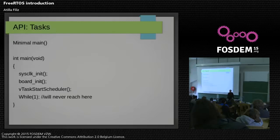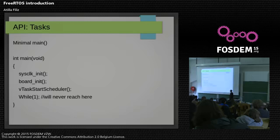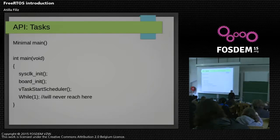This is what a minimal main function looks like with the hardware I use, mainly Atmel microcontrollers. The sysclock_init and board_init are completely microcontroller functions — they have nothing to do with FreeRTOS. The only FreeRTOS-related function here is vTaskStartScheduler. Until you run the scheduler, there is nothing about FreeRTOS, and once you start it, everything runs in the FreeRTOS context. Well, a scheduler without any tasks is nothing.